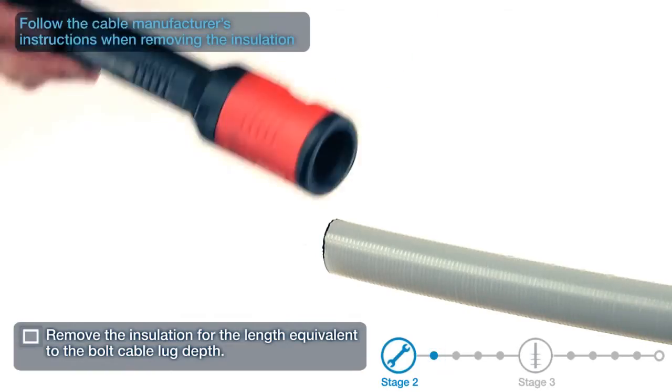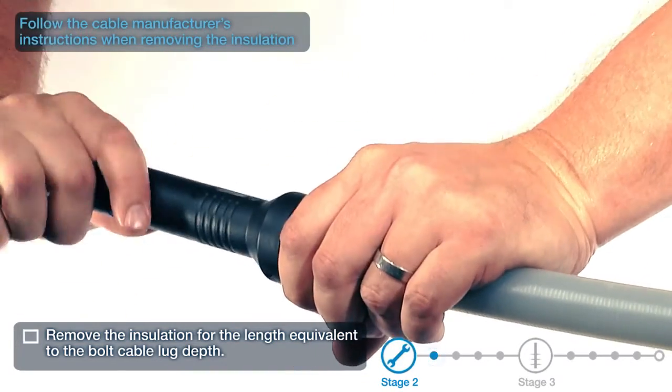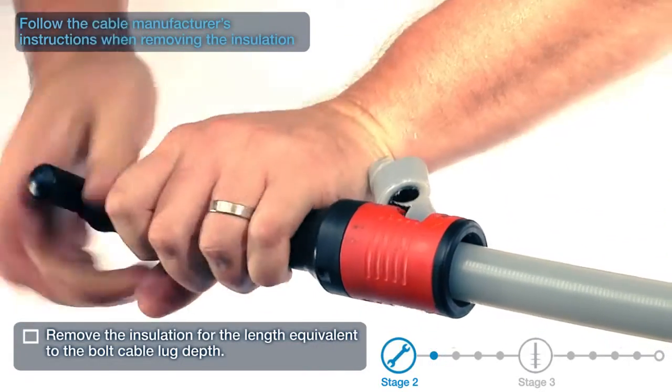Remove the insulation for the length equivalent to the bolt cable lug depth. Follow the cable manufacturer's instructions when removing the insulation.